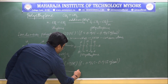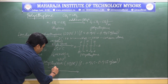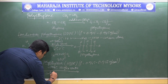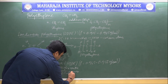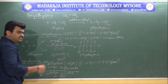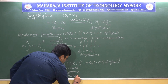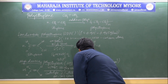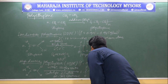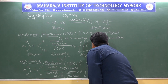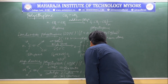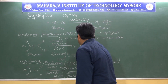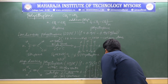Under these conditions — Ziegler-Natta catalyst, 2 to 5 atmospheres pressure, 50 to 60°C, and hexane as solvent — ethylene undergoes addition polymerization to form high density polyethylene. In this way, one can prepare the two different varieties of polyethylene: LDPE and HDPE.